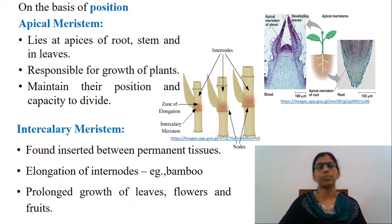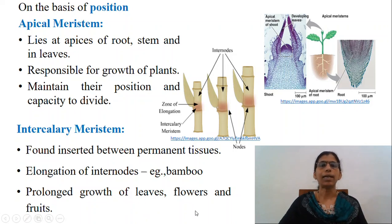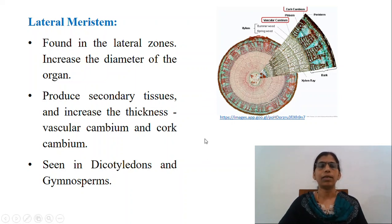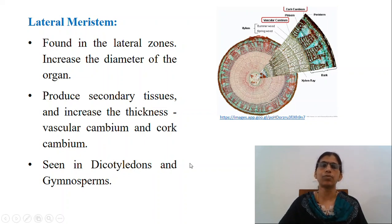Such meristems are commonly found in the stem of grasses and other monocotyledonous plants. Lateral meristems are composed of such initials which divide mainly in one plane, that is periclinally, and increase the diameter of an organ. They add to the bulk of the existing tissue or give rise to new tissues. These tissues are responsible for growth in thickness of the plant. The cambium and cork cambium are the examples of this type.